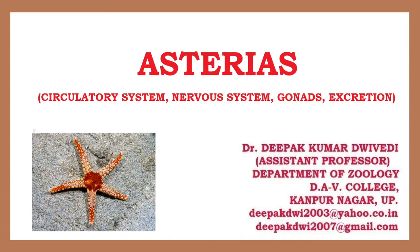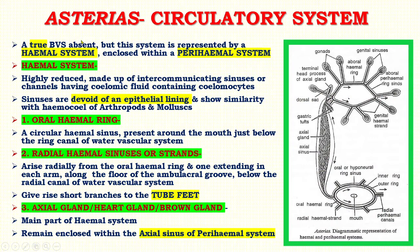Hello friends. Today you are going to learn the second part of the type study of Asterias — that is, you will study the circulatory system, nervous system, reproductive system, and excretory system. These systems are included in this lecture. First of all, you will learn the circulatory system.